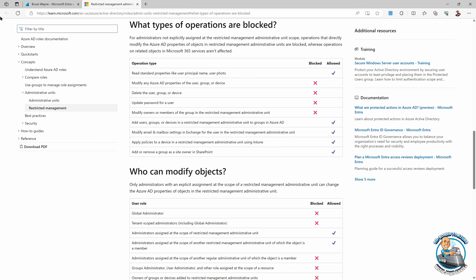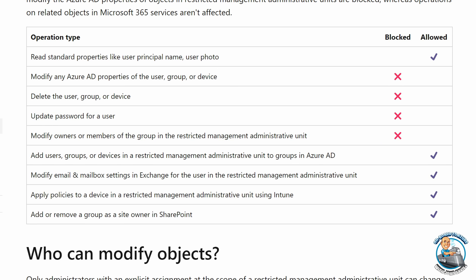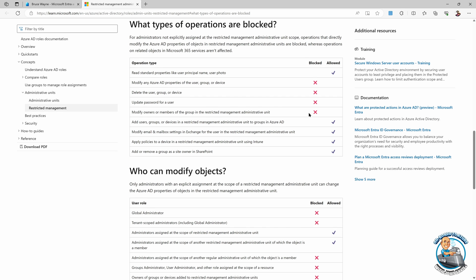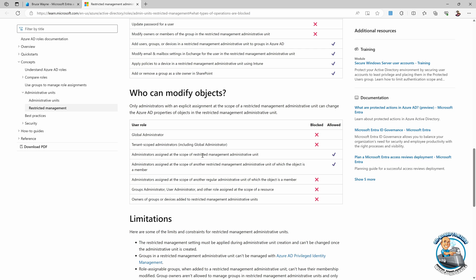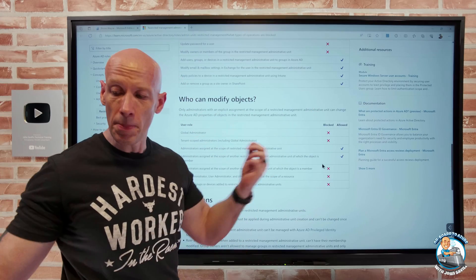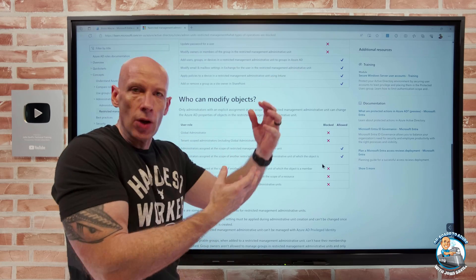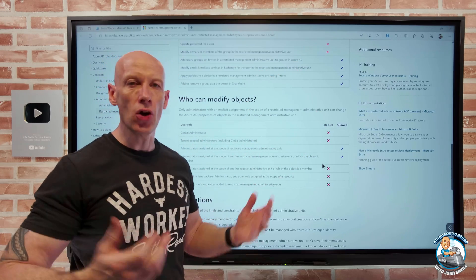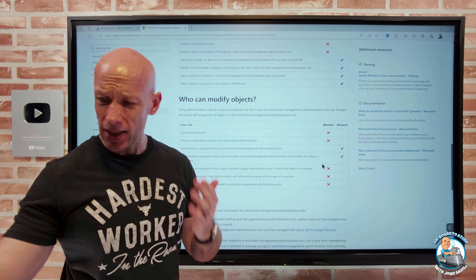And I can see exactly what is blocked. If we look at the documentation, it shows the type of operations that are blocked. And it talks about, hey, modify any properties of the user group or device, delete the user group or device, update the password, modify owners or members of the group. So it's going to restrict all of those items. And it talks about, hey, who can do actions on it? Well, it's only if I'm scoped at that unit or the users in another administrative unit that's restricted. So remember, a user or an object can be in multiple administrative units. So if I'm in multiple administrative units, if someone is scoped as a role at any of those, they would have the permission to act on that object.